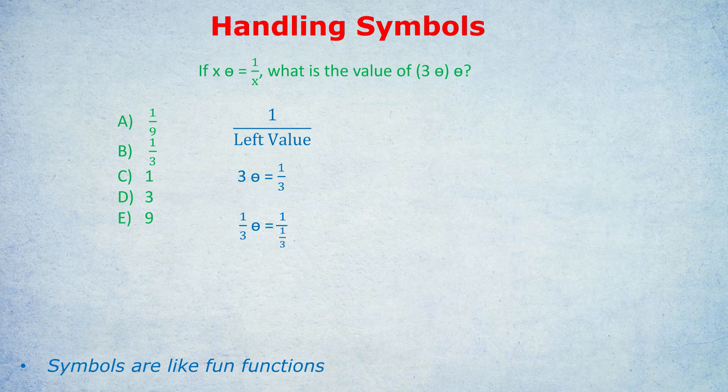Now to get the answer, we need to know about fractions. One over a fraction becomes the flipped version. So one over a third is three over one, which is 3. The final answer is 3. We're back to where we started, which is quite cute. Another reason why symbols are fun functions.